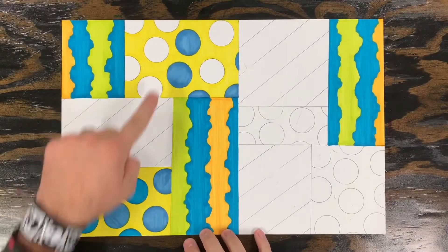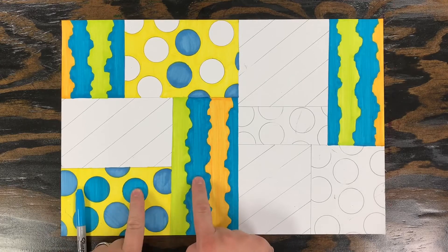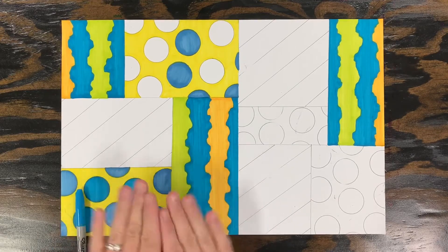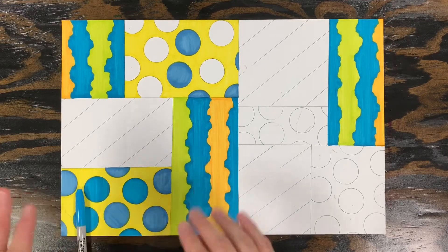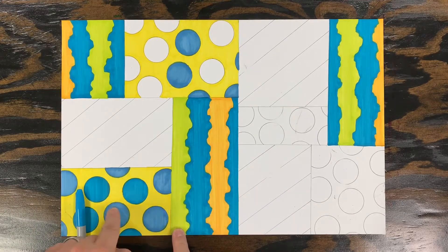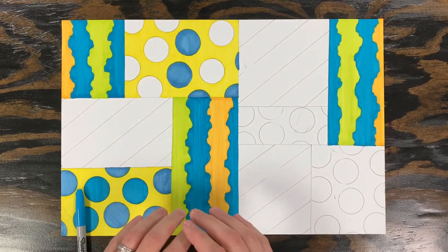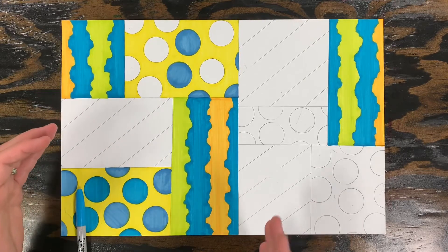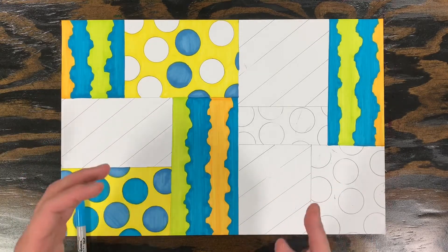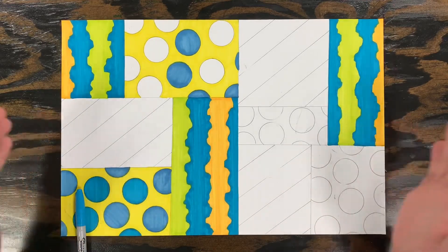For my second group of colors, you can see that I used one color that was the same so that these two different groups still work together a little bit. But then I incorporated two new colors into the pattern and I'm going to do the same thing with the third group so that even though all three patterns are different because they have different colors, they still have something in common with each other which is going to help them work together as one artwork.